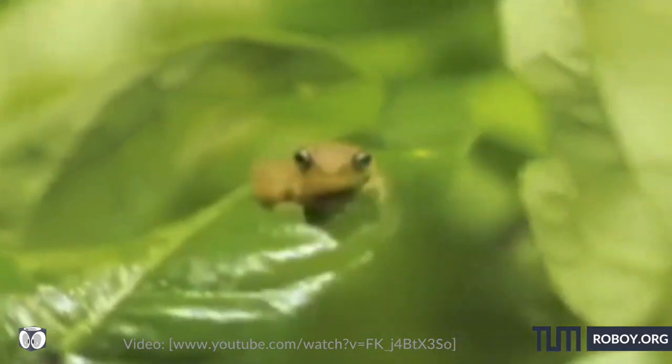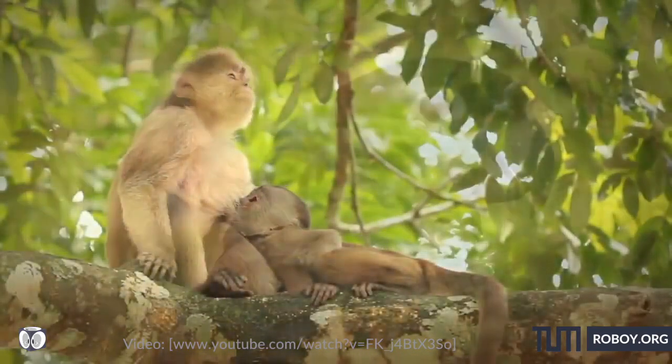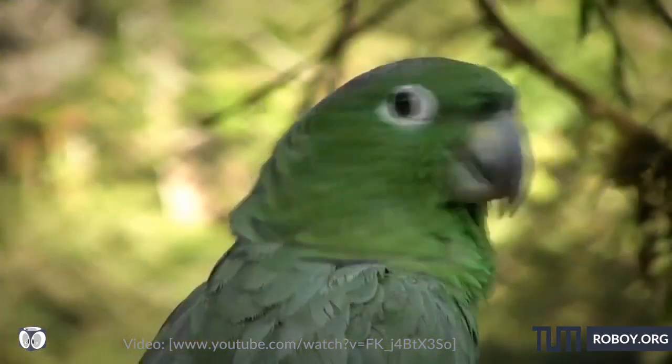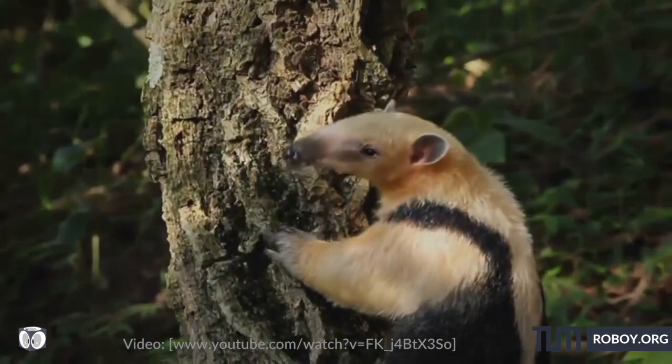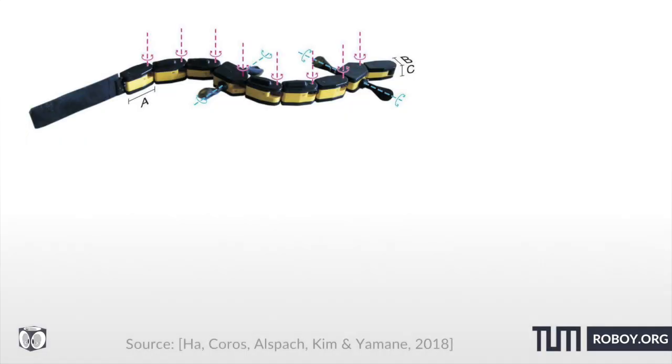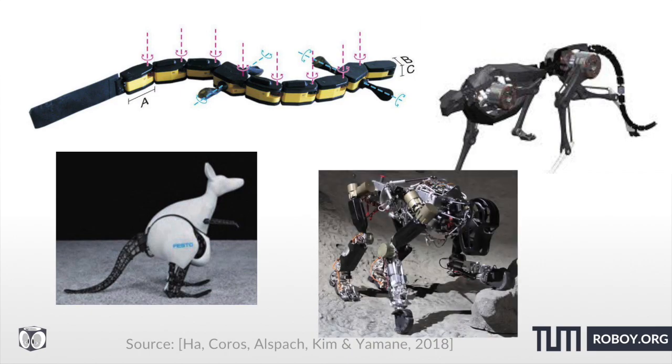Under this paradigm, many robots have been successfully designed and built by mimicking the morphology and locomotion of real-life animals, including salamanders, cheetahs, kangaroos, and chimpanzees.